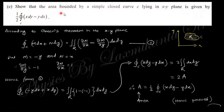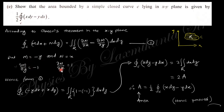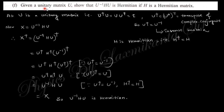The next question: show that the area bounded by a simply closed curve C lying in the xy-plane is given by the stated formula. Recall Green's theorem in the xy-plane: the closed line integral of M dx + N dy equals the surface integral of (∂N/∂x − ∂M/∂y) dA. Putting M = −y and N = x, the partial derivatives give 1 and −(−1) = 1, summing to 2. So the area equals half the closed integral of (x dy − y dx), which proves the result.